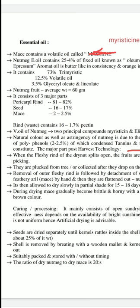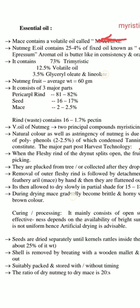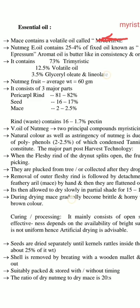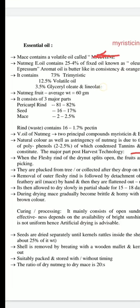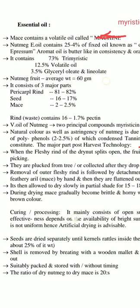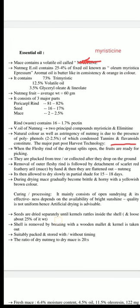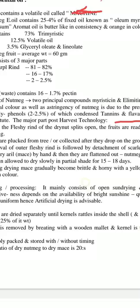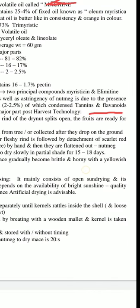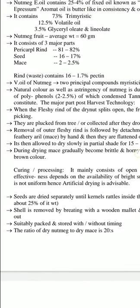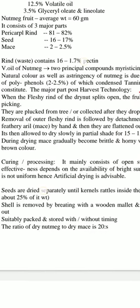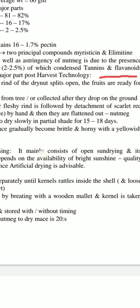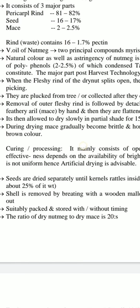For the standards of the nutmeg fruit: average weight is 60 grams, consisting of 3 major parts — the rind, the hard shell, and the mace on the upper portion. Regarding the volatile oil of nutmeg, two principal compounds, myristicin and elemicin, are found in the volatile oil of nutmeg.